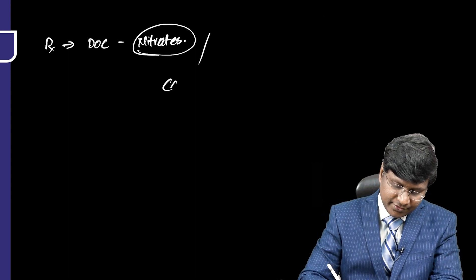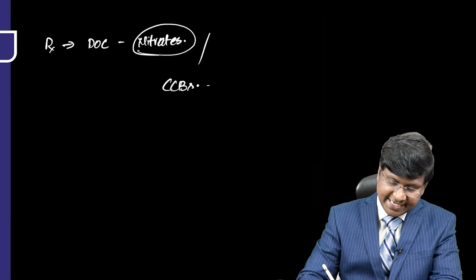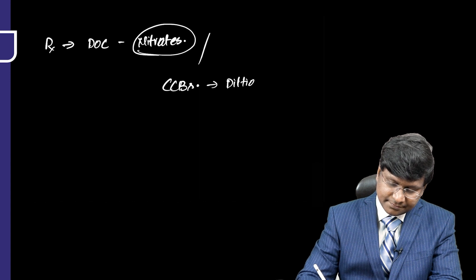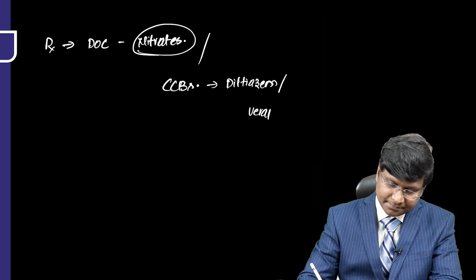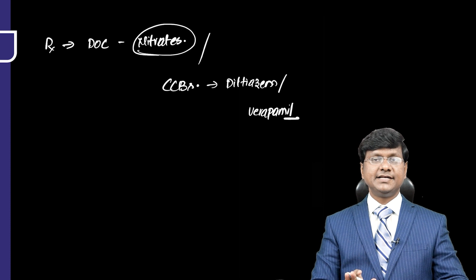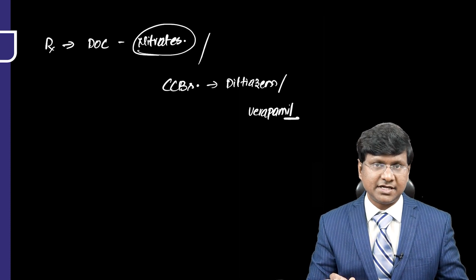The other alternative drugs will be the calcium channel blockers. These calcium channel blockers include diltiazem or verapamil. These are considered as the drug of choice. Actually, it is nitrates first. The alternative will be the calcium channel blockers.